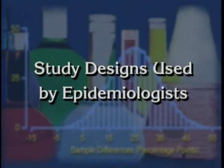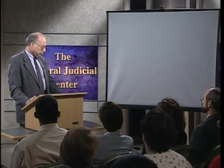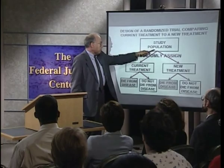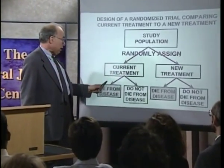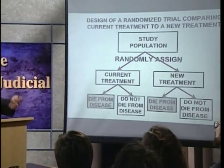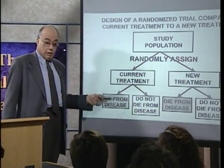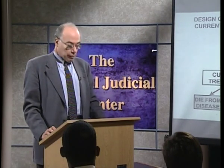Turning to the types of study designs used in confirming or refuting a hypothesis: the first type is the randomized trial, also called the randomized clinical trial, because it is often used in testing new therapies. We begin with a study population and randomly assign the members to a current treatment or to a new treatment. We then follow up both groups of patients, determine how many die from the disease in each group. If the new treatment is more effective, we would expect to see fewer people dying among those who receive it. The design of the randomized trial is basically a simple one, and it is a very desirable type of study.